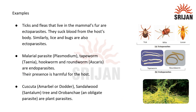Let's understand parasitism with the help of some examples. Ticks and fleas that live in mammal's fur are ectoparasites — they suck blood from the host body. Similarly, lice and bugs are also ectoparasites because they also live on the surface of the body.